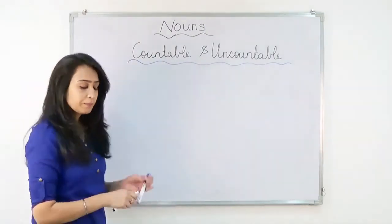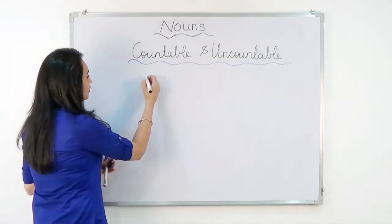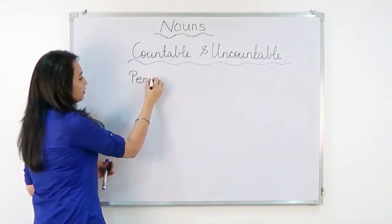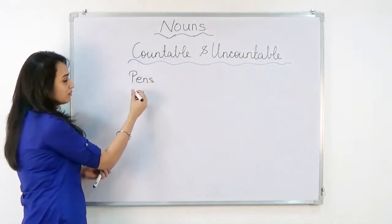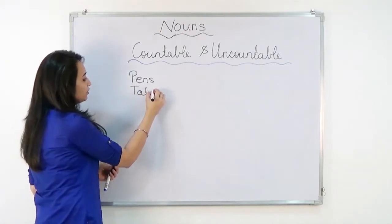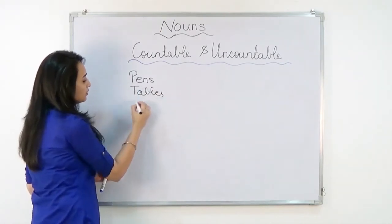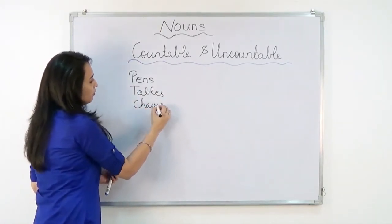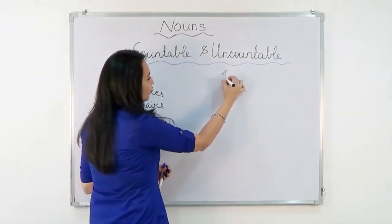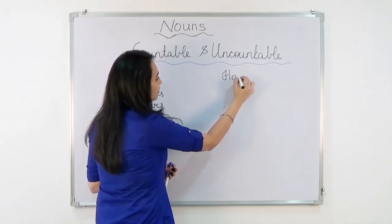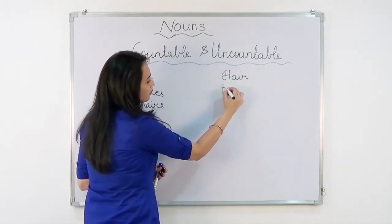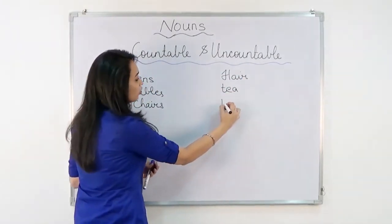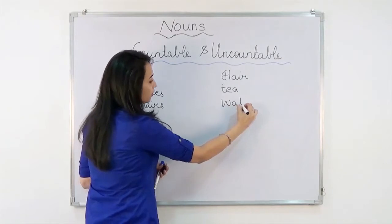So the countable ones would be pens, tables, chairs. Whereas uncountable would be hair, tea, water.